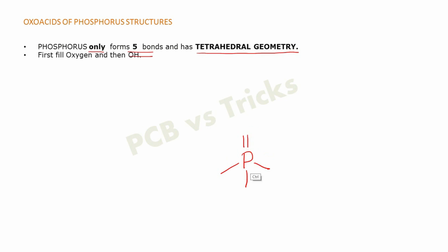The next point says that we have to fill oxygen first and then OH groups. You will fill one oxygen here and then you have to fill OH groups in the three remaining bonds. The number of OH groups will vary according to the oxoacid of phosphorus.